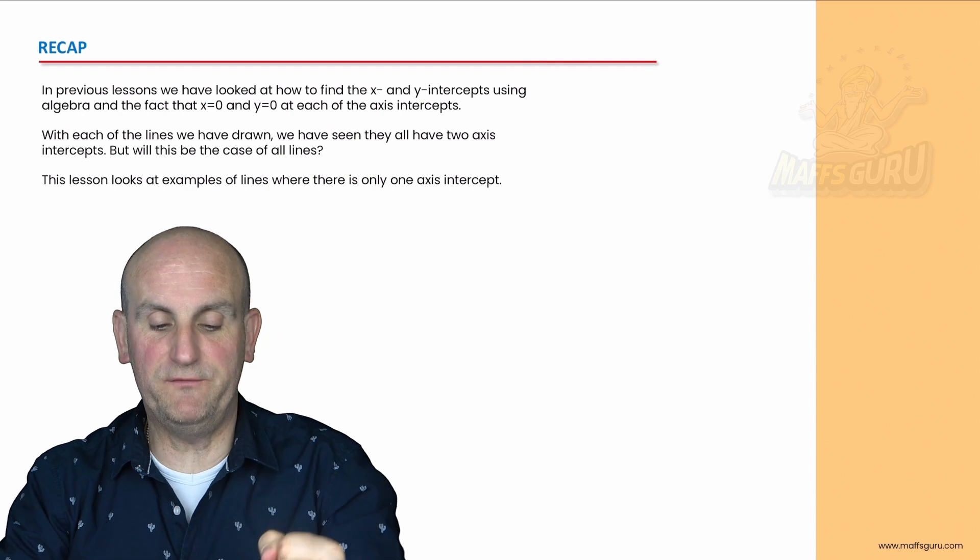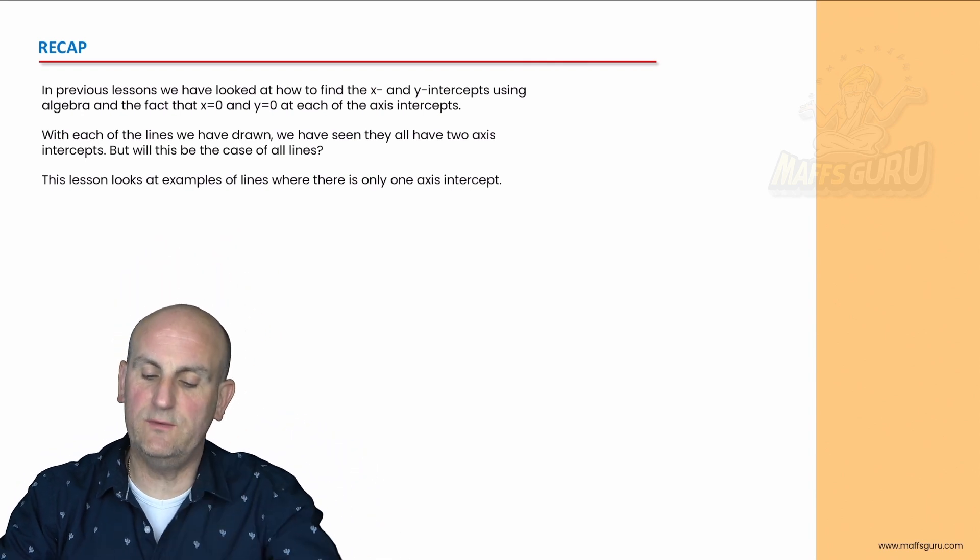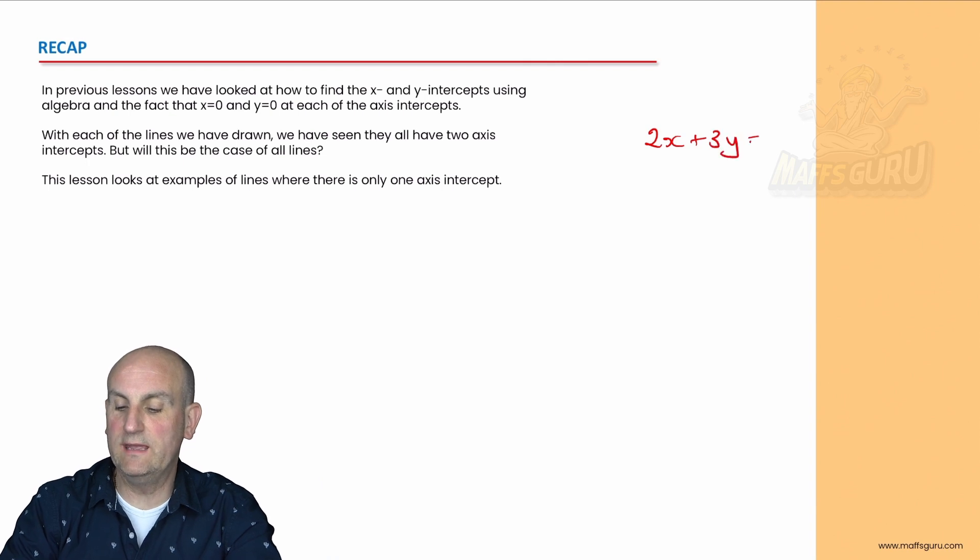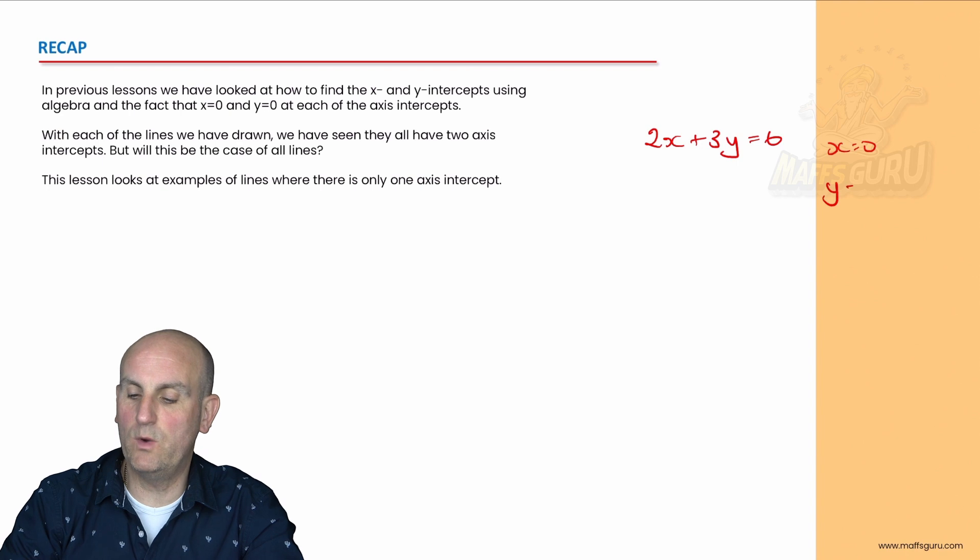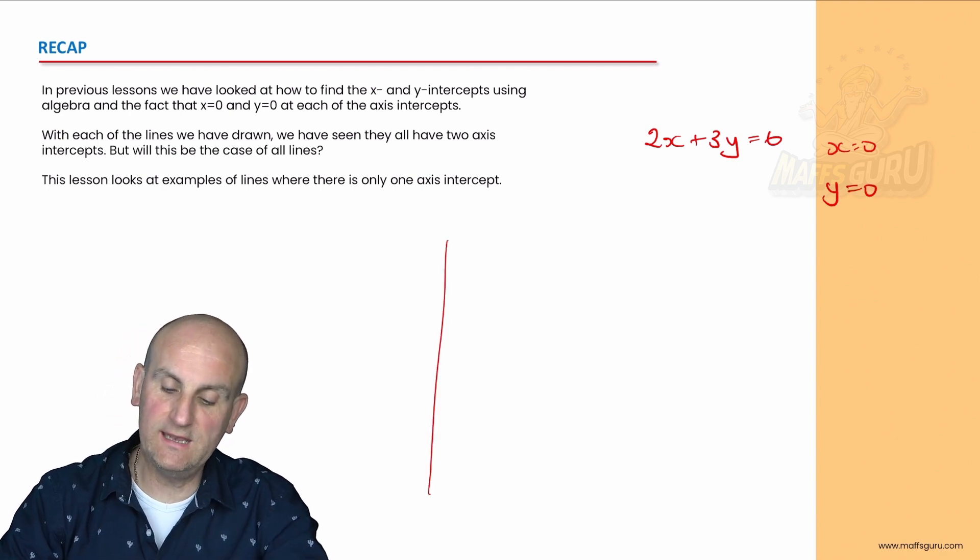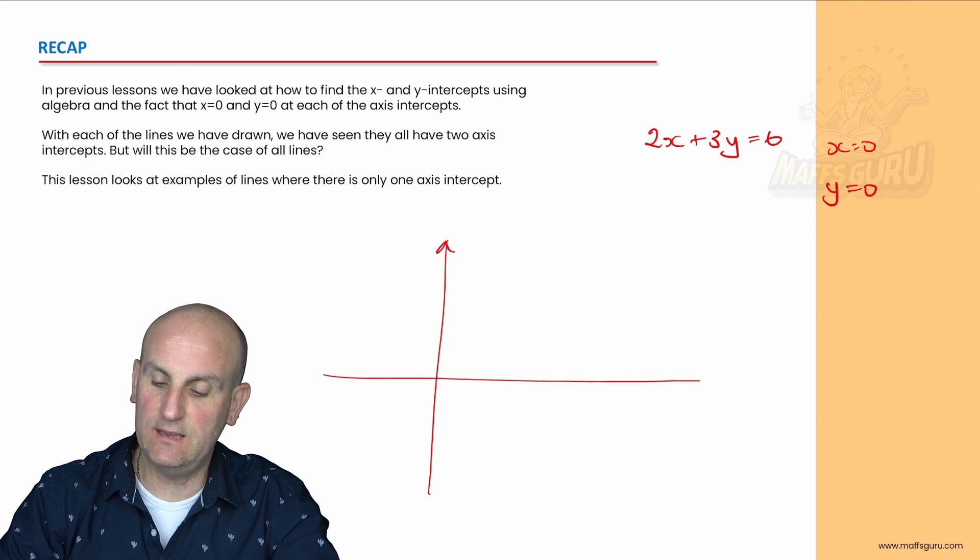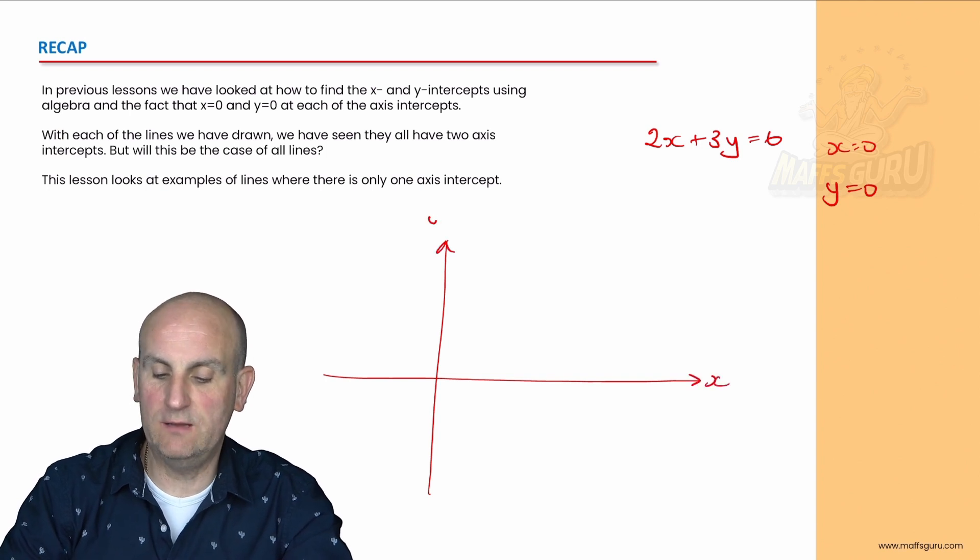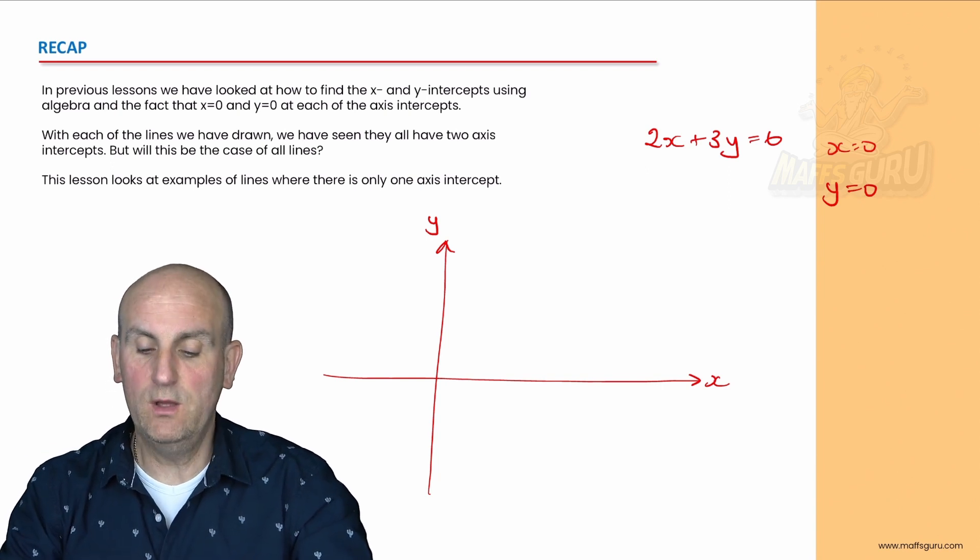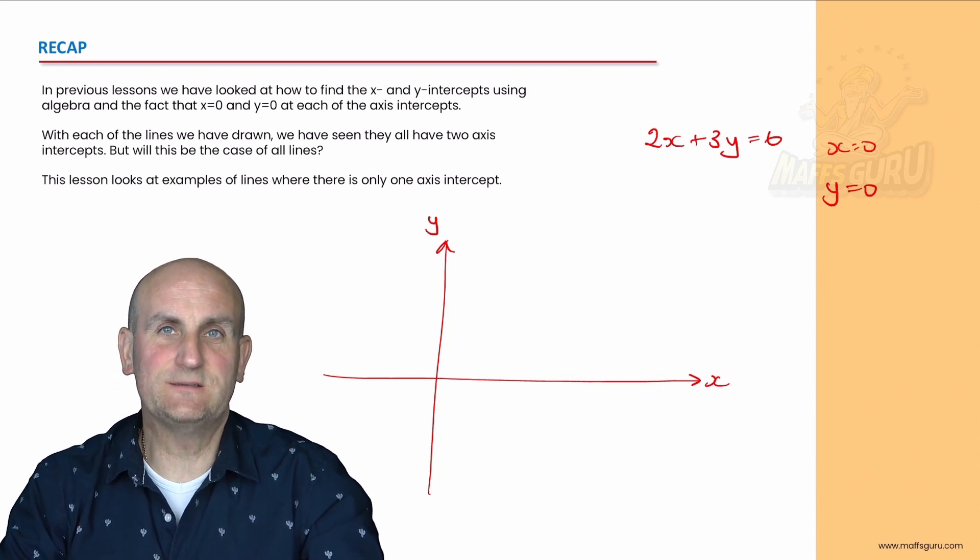In previous lessons we looked at how to find the line using x and y intercepts. With each of the lines we drew, we saw they had two axis intercepts. This lesson looks at examples of lines where there is only one axis intercept.